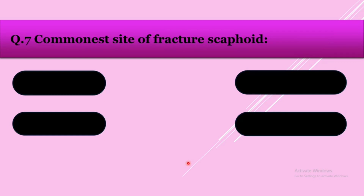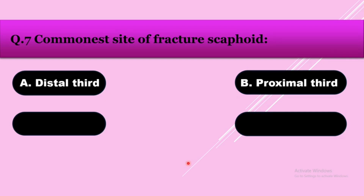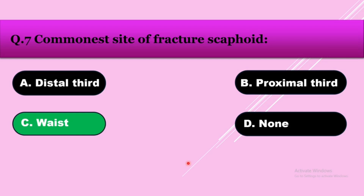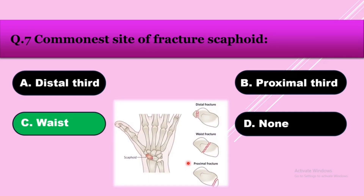Question number seven: The commonest site of scaphoid fracture — option A: distal third, option B: proximal third, option C: waist, option D: none. The answer is waist. The waist of the scaphoid is the most common site of scaphoid fracture. The carpal bones include distal, waist, and proximal scaphoid fracture zones; the most common is the waist.